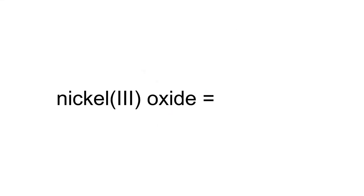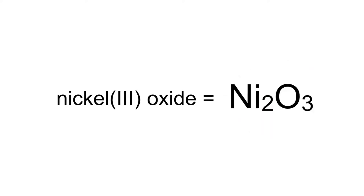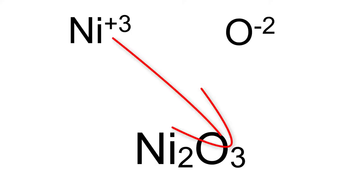Let's try another example: nickel(III) oxide. Please pause the video to give yourself enough time. The answer to this is Ni2O3. Again, you can check your work by using the crossover method as shown.